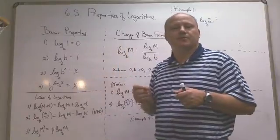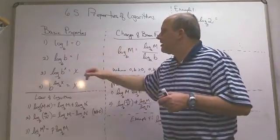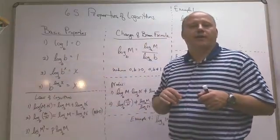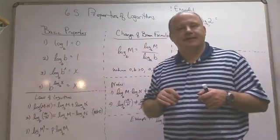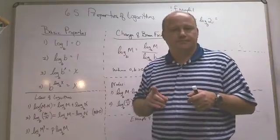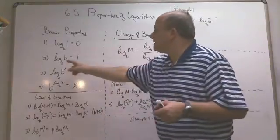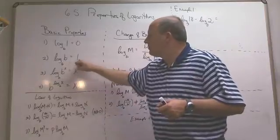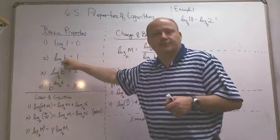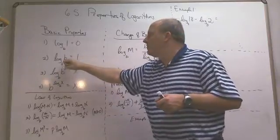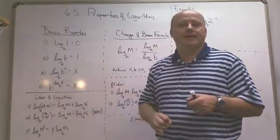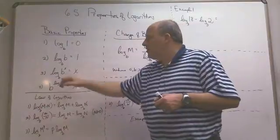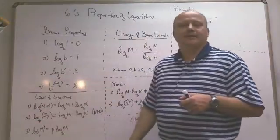The reason is that in exponential form, B to the 0 equals 1, and that's true. The second property is log base B of B equals 1: if the input is the same as the base, the output is 1. That makes sense because in exponential form, B to the first equals B, which is obviously true.